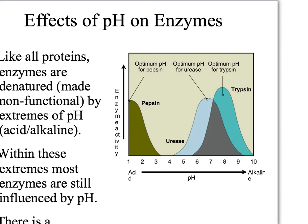So, again, with temperature and pH, this is why organisms have to maintain homeostasis and keep life in that Goldilocks zone — they want to keep enzyme activity running at optimum levels.